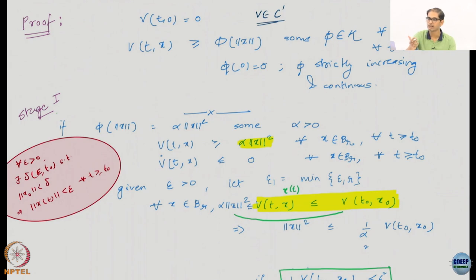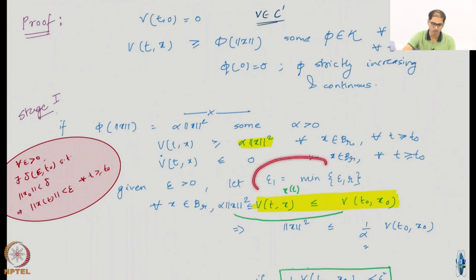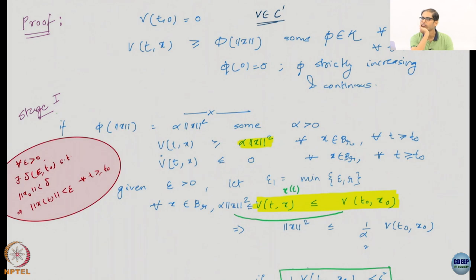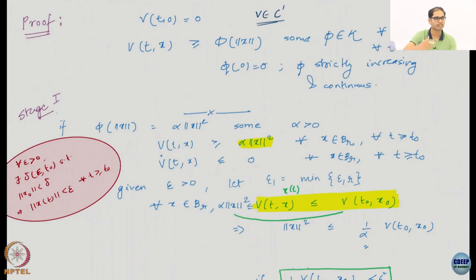Start with an ε given by the user. Construct ε₁ = min(ε, r). Why? The states have to remain in the ball of radius r. If the given ε-ball is larger than r, it doesn't make sense to use the large ε-ball; it is better to use r itself, because my trajectories have to stay within the r-ball.